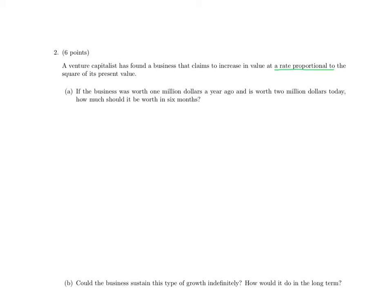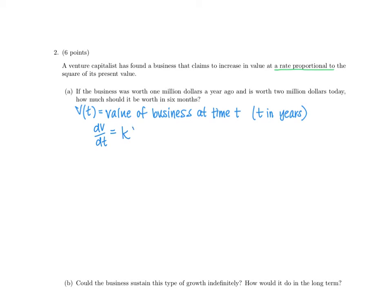Let's name the function V, where V(T) is the value of the business at time T. When we say the value increases at a rate proportional to the square of its present value, that means dV/dt = K times V², where K is a constant of proportionality. V here is V(T), and we know that y itself is a function of T, so we have this product of V² and T on the right-hand side.